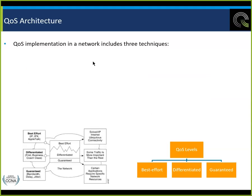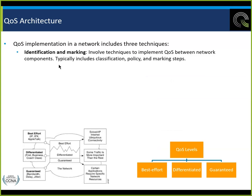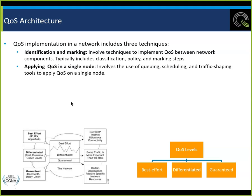The quality of service architecture has three techniques. First, we have to identify and mark what we're going to use. The process: first identify the traffic, mark the traffic, write a policy, then apply the policy. We apply QoS to a single node using queuing, scheduling, and traffic shaping tools, and then apply policy management across the network to control and manage network traffic.